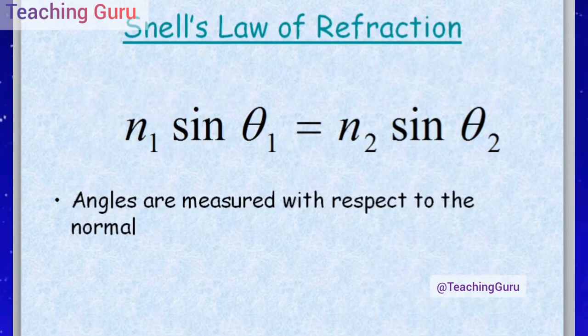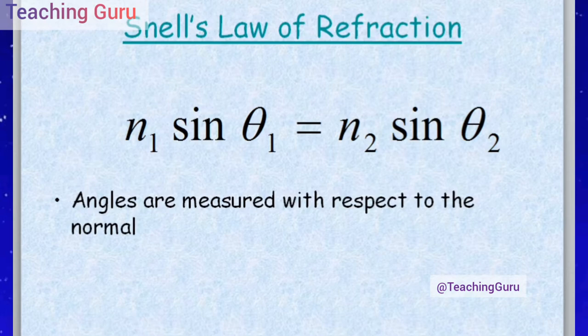Now, Snell's law of refraction: n1 sin θ1 = n2 sin θ2. Here, θ1 is the angle between the normal and the incident ray, and n1 and n2 are the refractive indices of medium 1 and medium 2 respectively. θ2 is the angle between the normal and the refracted ray.